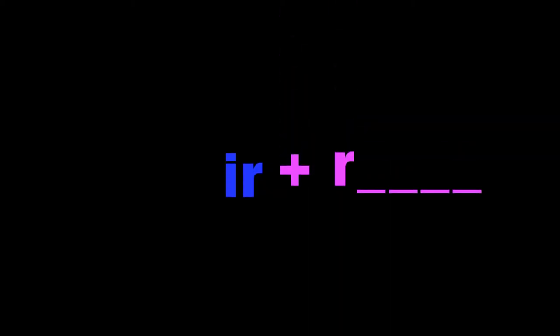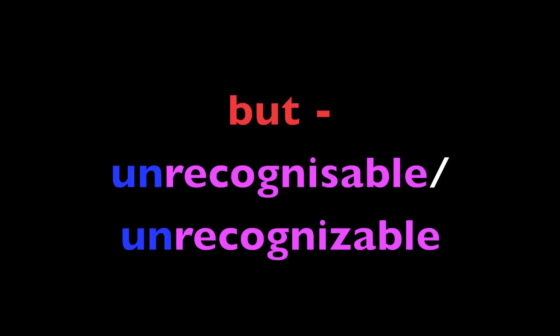The IR prefix — we use it before words starting with R. Relevant — irrelevant. Responsible — irresponsible. Regular — irregular. But 'recognise' becomes 'unrecognised' or 'unrecognisable' — always exceptions!